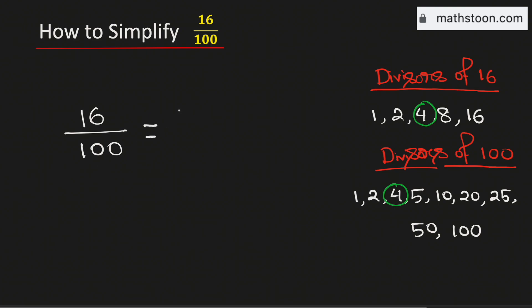Now, to simplify it, we will divide both the numbers 16 and 100 by their greatest common divisor which is 4. And by doing so, we will get 4 over 25.